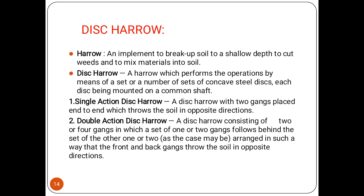The disc harrow is an implement used to break the soil to a shallow depth, cut weeds, and mix materials into the soil. It performs these operations by means of sets of concave steel discs, each disc being mounted on a common shaft. The single action disc harrow has two gangs placed end to end, which throws the soil in opposite directions.